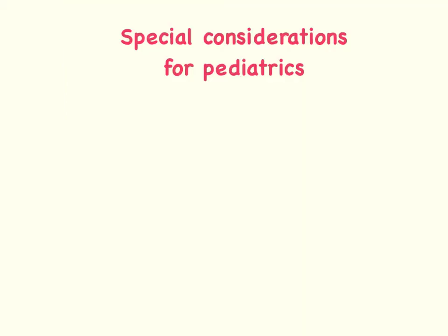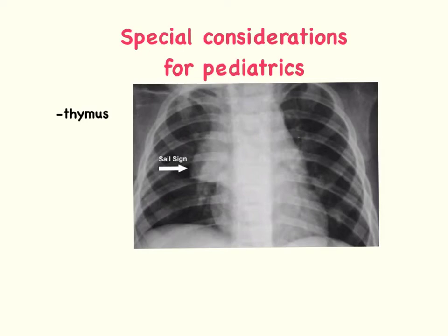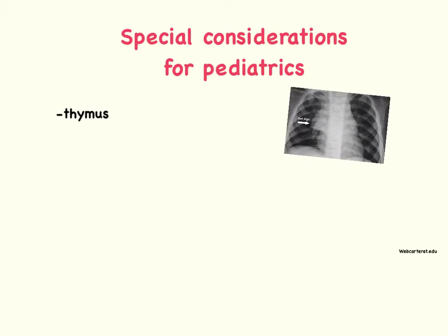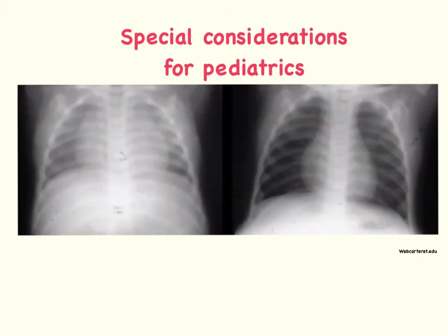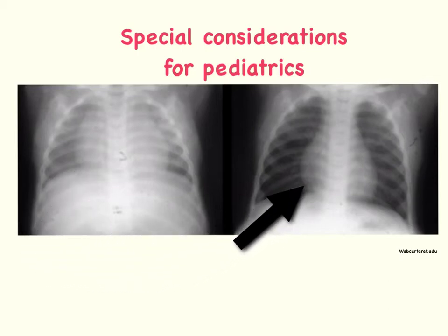As we all know, children are not just small adults, so there are certain things to consider when evaluating a chest x-ray in a child versus an adult. One thing to evaluate is the thymus or thymic shadow, which can be visualized in the right upper area of the chest — called the sail sign on x-ray — and can be confused with an enlarged heart, atelectasis, or pneumonia. Also, chest x-rays show the best quality on an inspiratory film; however, smaller children are unable to follow commands, so you may get an expiratory film, which can make the heart appear enlarged, as seen in this example comparing expiratory and inspiratory films of a neonate.